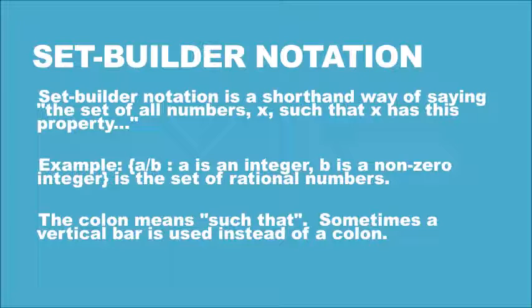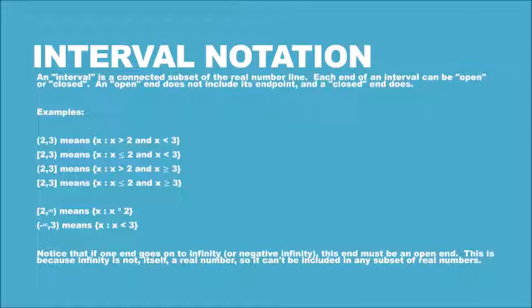a is an integer, b is a non-zero integer. It's the set of rational numbers. The colon means such that; sometimes a vertical bar is used instead of a colon.